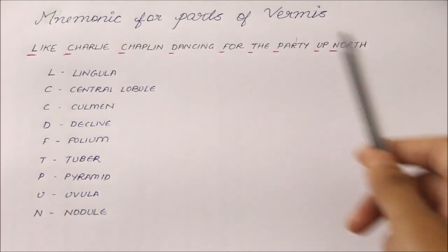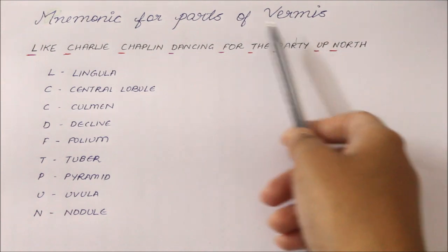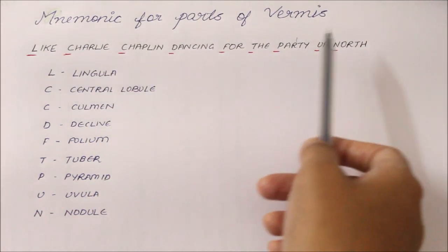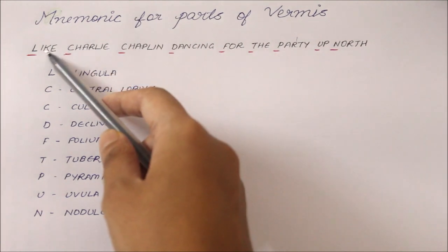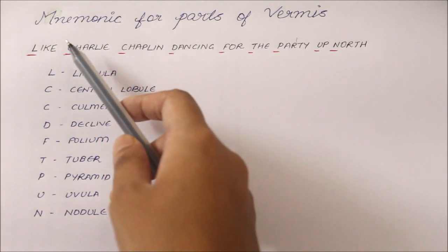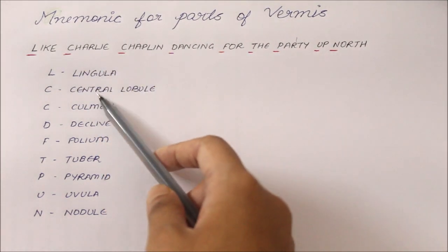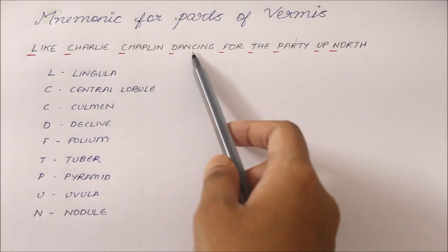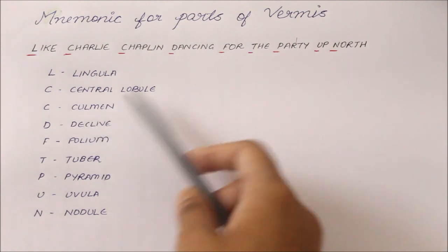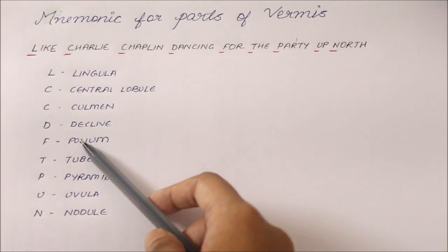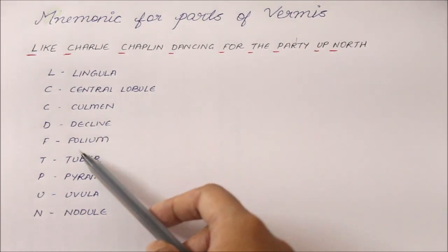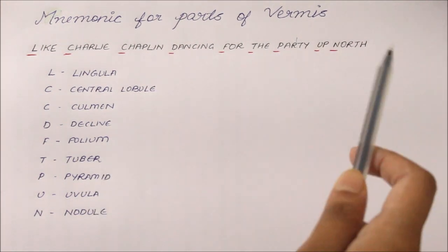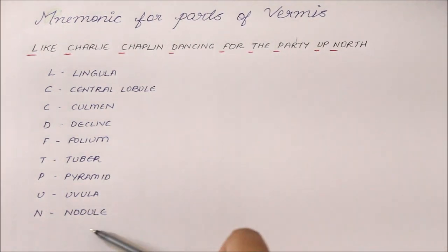An easy way to remember the parts of the vermis is the mnemonic: 'Like Charlie Chaplin dancing for the party up north.' L in like stands for lingula, C in Charlie for central lobule, C in Chaplin for culmen, D in dancing for declive, F for folium, T for tuber, P for pyramid, U for uvula, and N in north for nodule.